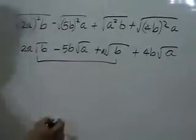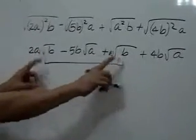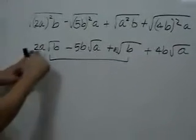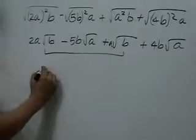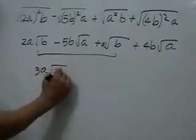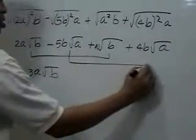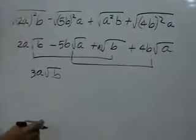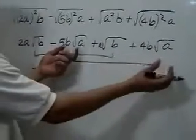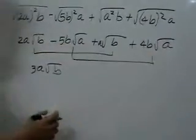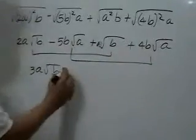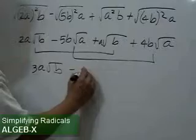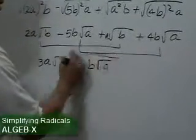We can combine these two factors because they share the common term square root of b. So you have 2a square root of b plus a square root of b will give us 3a square root of b. And these two other factors both share square root of a. So negative 5b square root of a plus 4b square root of a is negative b square root of a.